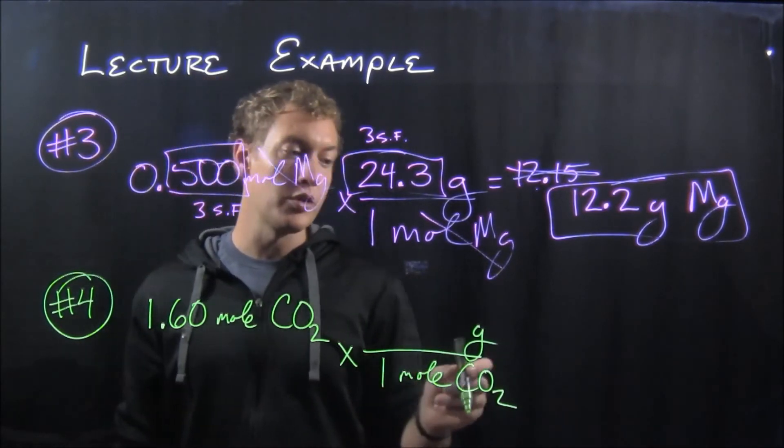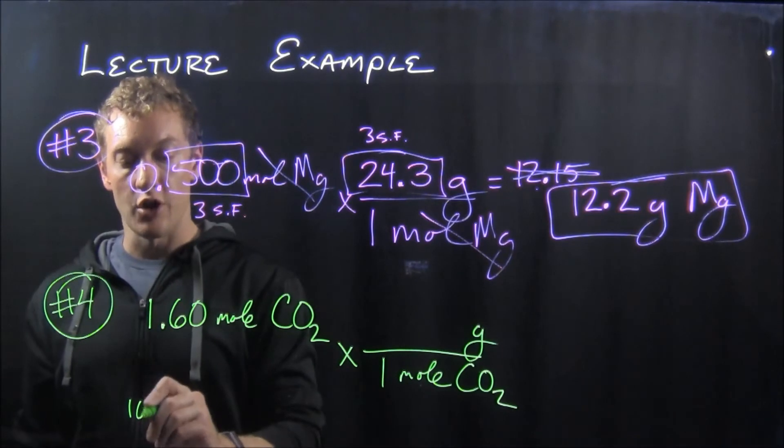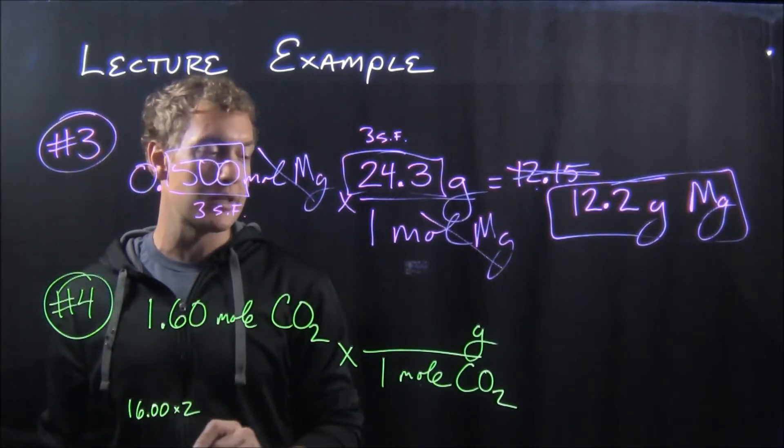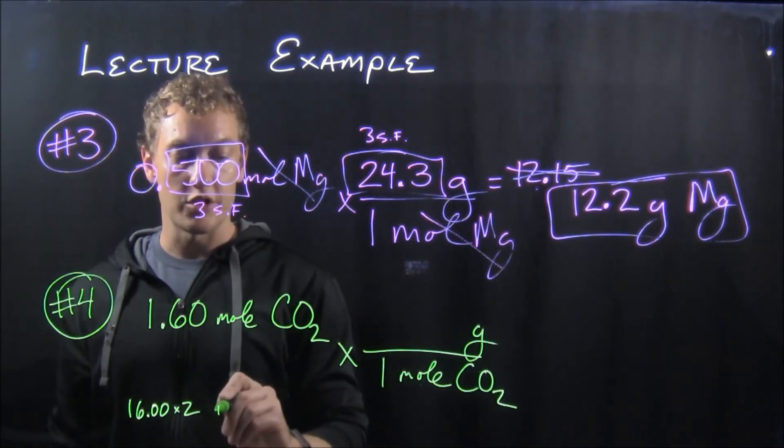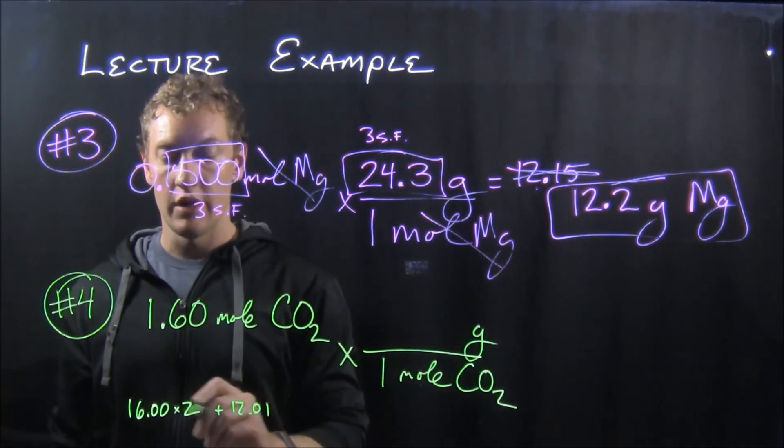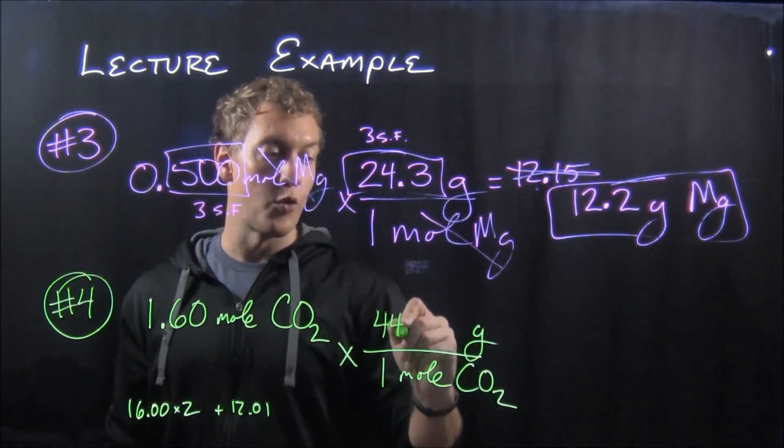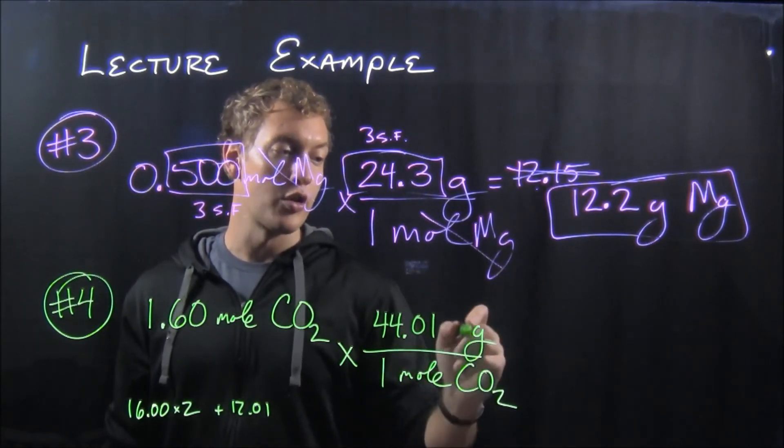So if you look on the periodic table, oxygen is always 16.00 grams - you got two of those. Carbon is 12.01, and so you add all that up and that's going to come out to be 44.01 grams...